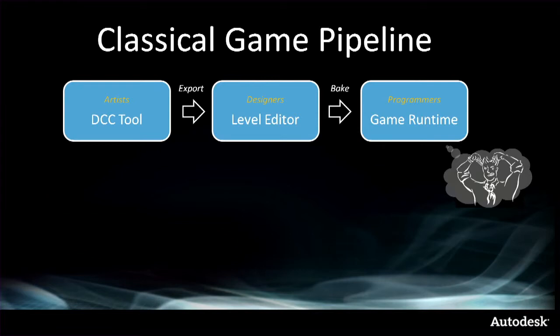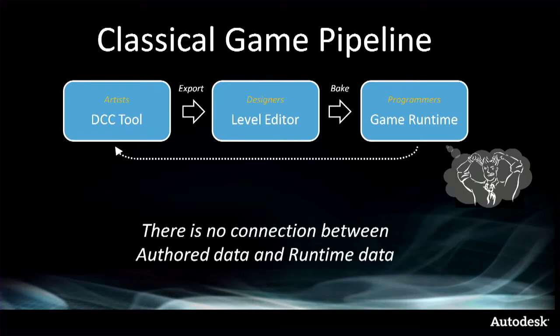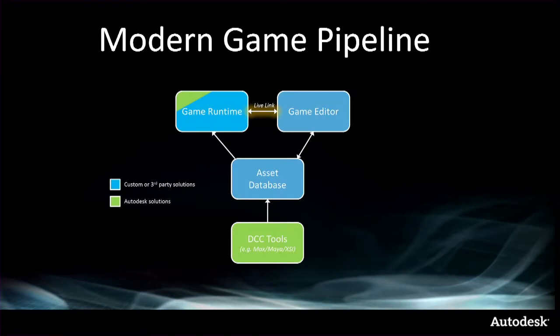The classical pipeline is okay because you can move data through it quickly and programmers can intervene and put breakpoints. But the big problem is what happens when people have to go back to the beginning. By the time your tree in Maya has ended up in the game runtime as some vertex buffer with some address, all the connections have been lost and nobody really knows where to point the finger of blame anymore.